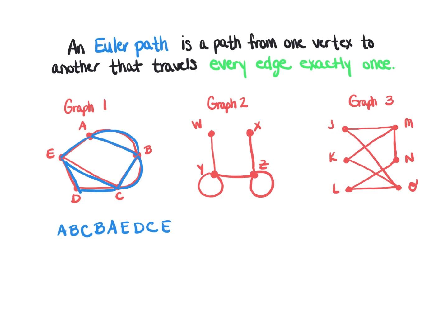Looking at graph number two, we can create an Euler path as well. Beginning at W, travel from W to Y, then take the loop which leads back to vertex Y, then go over to Z, take the loop at Z ending back at Z, and then travel on to vertex X.